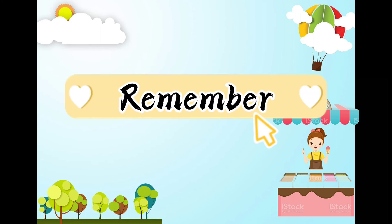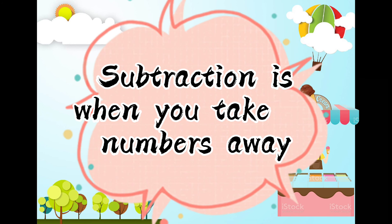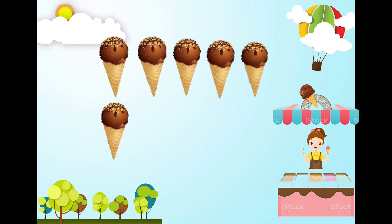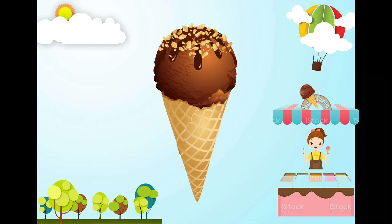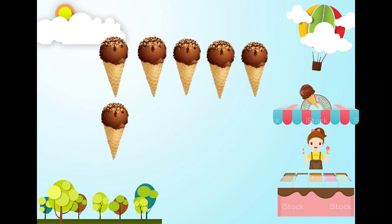Remember that subtraction is when you take numbers away. Look, we still have 6 ice creams to give away. And, I will give 1 ice cream to Matt. Let's do the subtraction. 6 ice creams minus 1 ice cream. Can you count if how many are left? Okay, there you go. 6 minus 1 is 5.